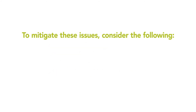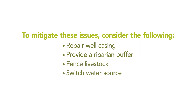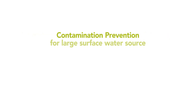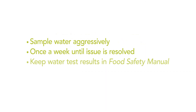To mitigate these issues, consider the following: repair your well casing, provide a riparian buffer for livestock around an irrigation pond, and fence livestock out of irrigation ponds and drainage areas. Switch to another source of irrigation water until results are below the EPA standard. Large surface water source issues may require contamination prevention methods such as berms, diversions, and/or fences. Sample water aggressively at least once a week until the contamination issue is resolved. Keep all records of water tests in your food safety manual.